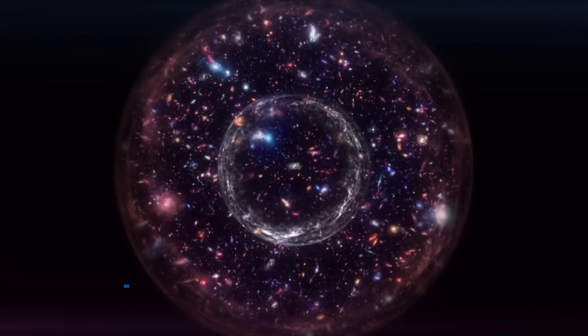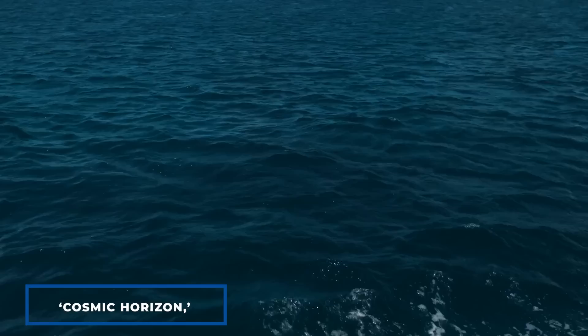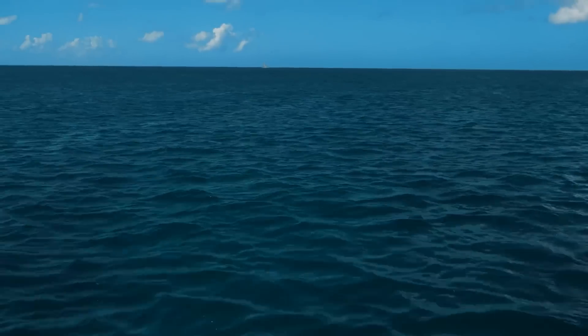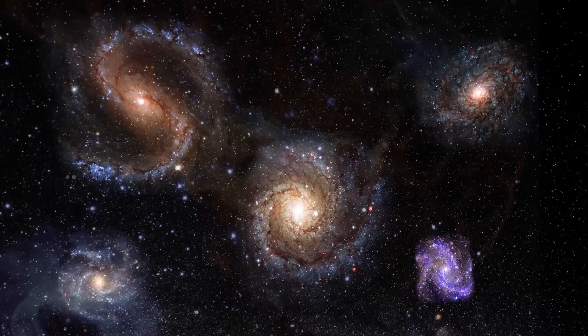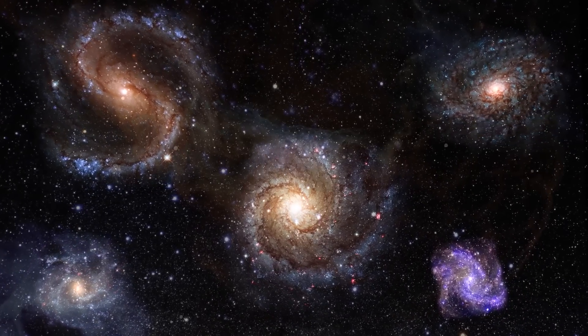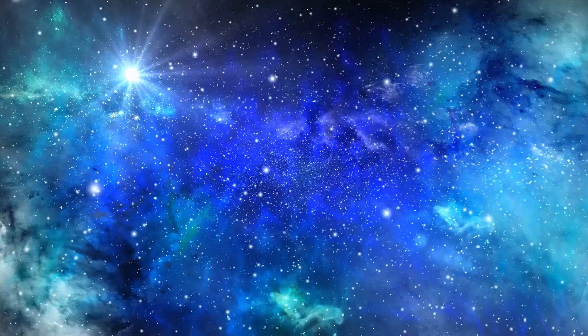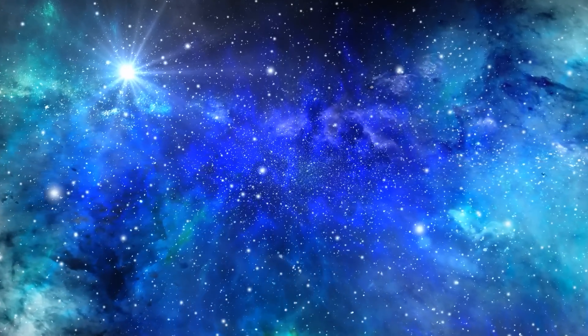The observable universe is bordered by a cosmic horizon, similar to the sea horizon. Just as we know there's more ocean beyond the horizon, we know there's an unlimited number of galaxies beyond the cosmic horizon. Their light simply hasn't reached us yet.